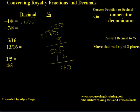And how do we determine what the percent is going to be? We're going to move that decimal over two places. So 0.125 is going to become 12.5%. That's what the lessor is going to get out of the deal.